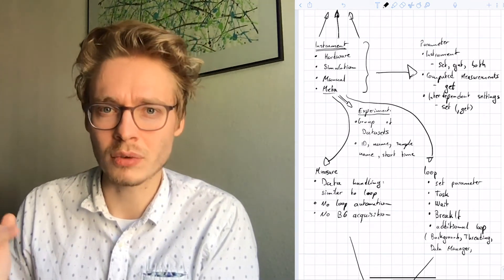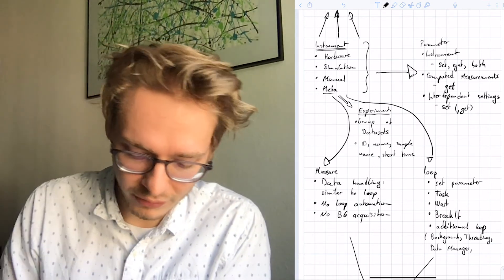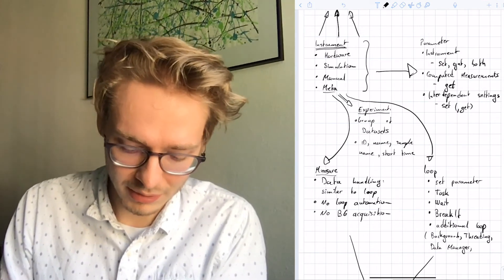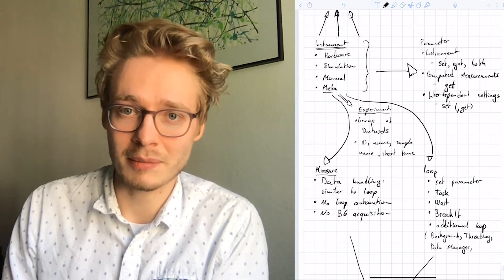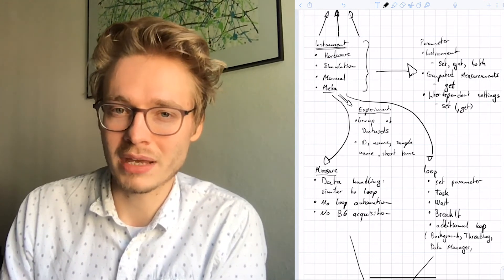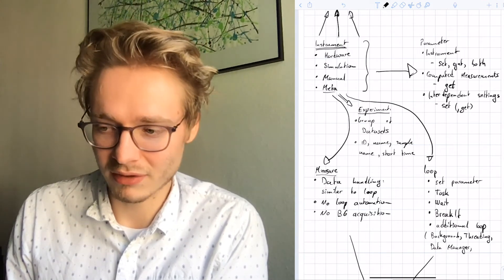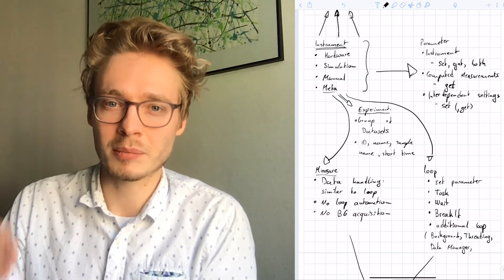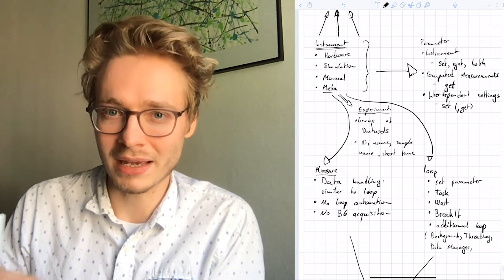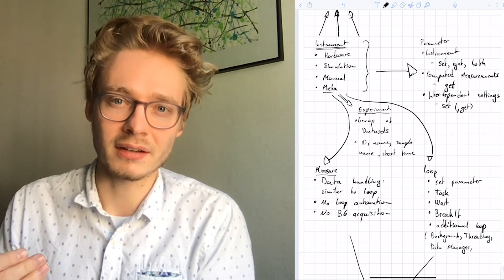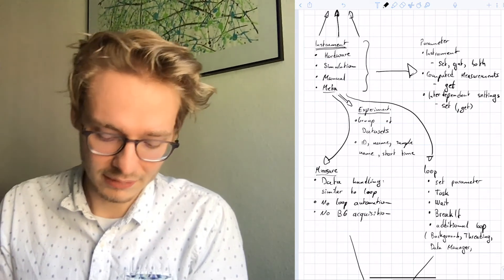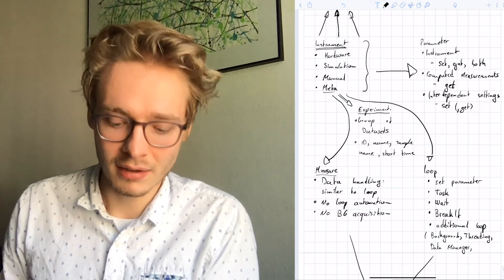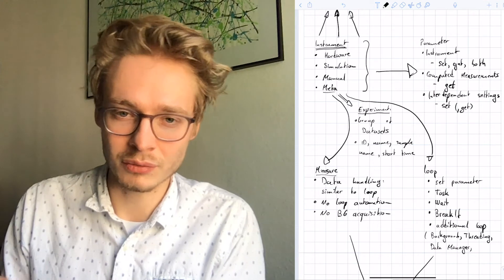What kinds of measurements exist in QCodes? First, there's the 'measure' function, which is just measuring. The nice thing is it has integrated data handling — you can use all the different data-saving functions. However, it doesn't have any loops, so it just performs a single measurement with no automated handling of the experiment itself. There's also no background data acquisition, meaning you can't do real-time plotting. Usually you only use 'measure' if you can't use the loop.